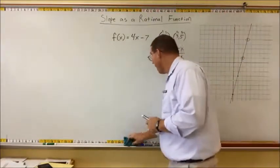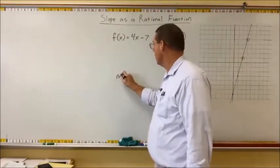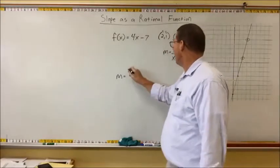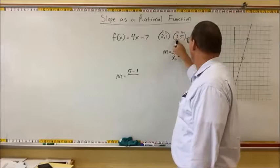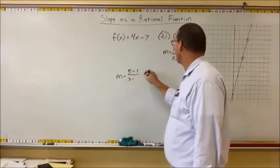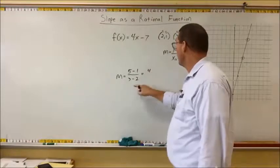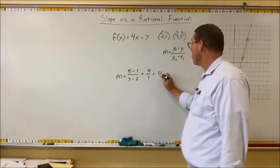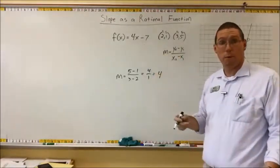Alright. So now we can calculate the slope. We can say that m is equal to y2, 5, minus y1, 1, over x2, 3, minus x1, 2. And 5 minus 1 is 4. And 3 minus 2 is 1. And 4 over 1 is 4. And so we just proved something that we already know, that the slope of this line is 4.